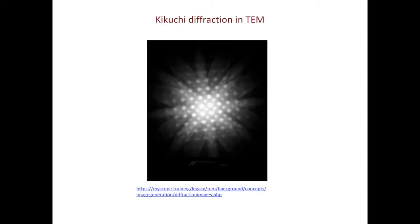When using TEM, in the right conditions, you can also see Kikuchi lines. The main difference compared to the EBSD case is that these Kikuchi lines are superimposed with the diffraction spots. We have spent a lot of effort learning diffraction spots, but in this video we'll focus on the lines or bands we can see from the Kikuchi diffraction.